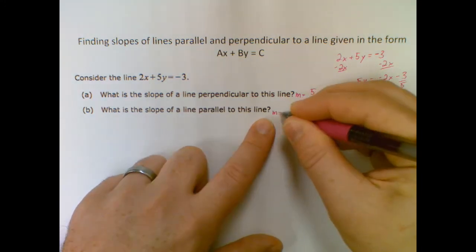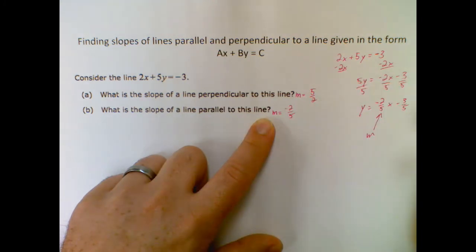And here the slope parallel will be exactly the same as my original. So negative 2/5.